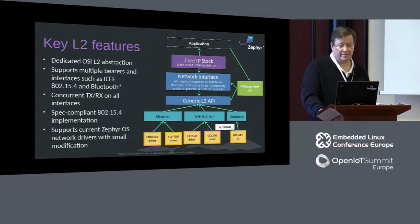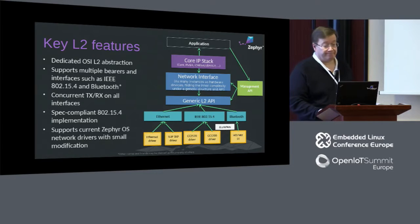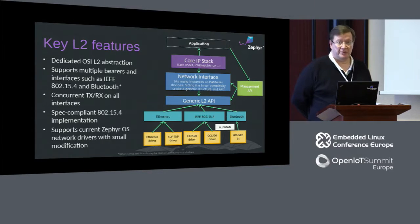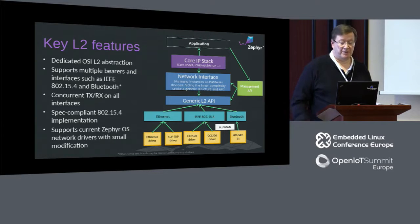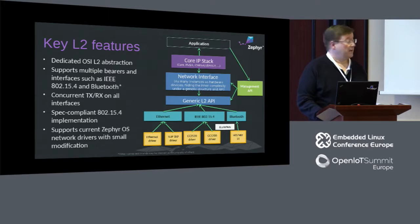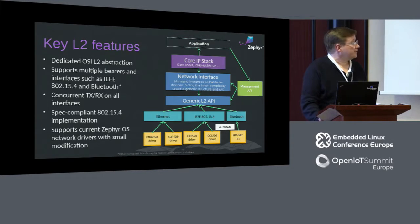The 802.15.4 stack has been enhanced in the native L2 layer. In the legacy stack the 802.15.4 support was very simple and not fully spec compliant — we are missing, for example, scanning, association, and disassociation. The network management API can be used to start a network scan and can also send events when important things happen in the stack, like when a new IP address is added to the system. Applications can listen to these events or activate commands to initiate scanning, for example.